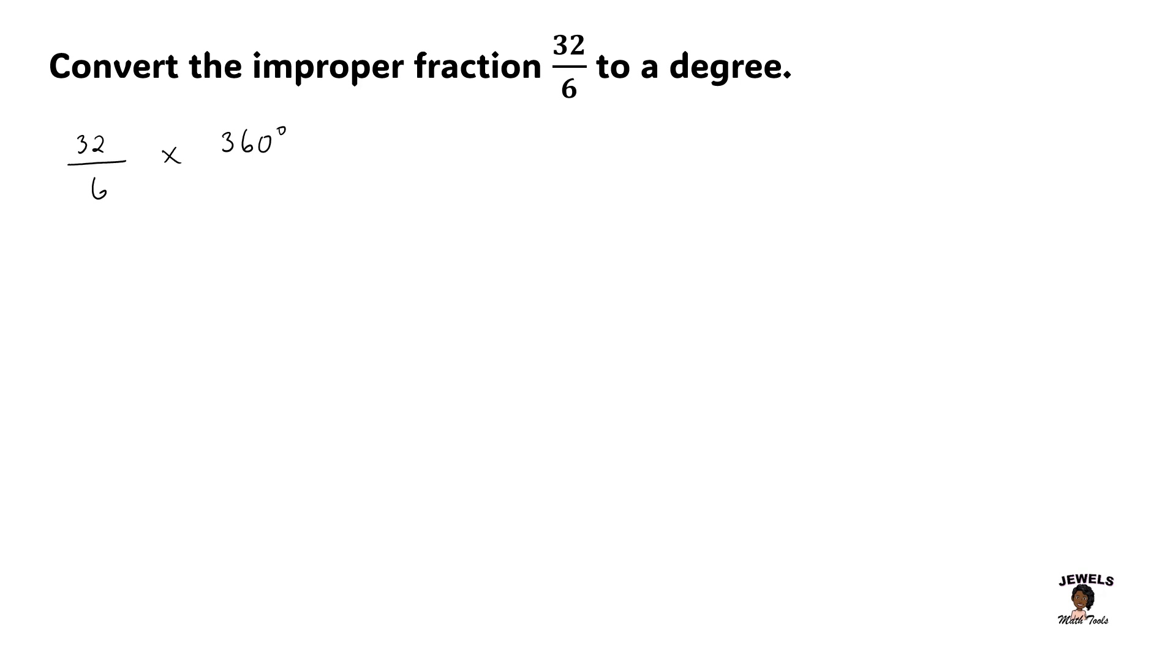When multiplying a fraction by a whole number, remember that you can always place a 1 in the denominator for your whole number. It does not change the value of the number, but it will make it easier to multiply the fractions if you are uncomfortable with multiplying a whole number by a fraction.